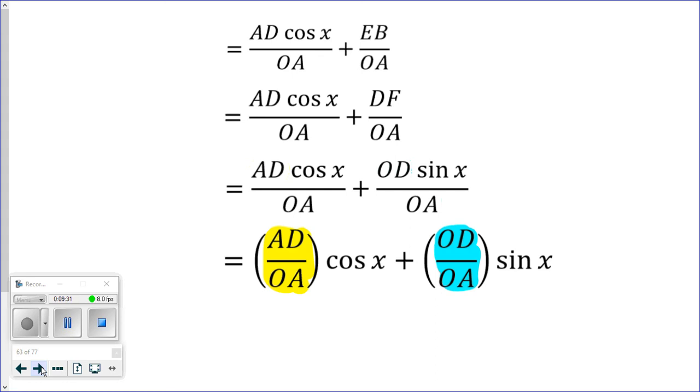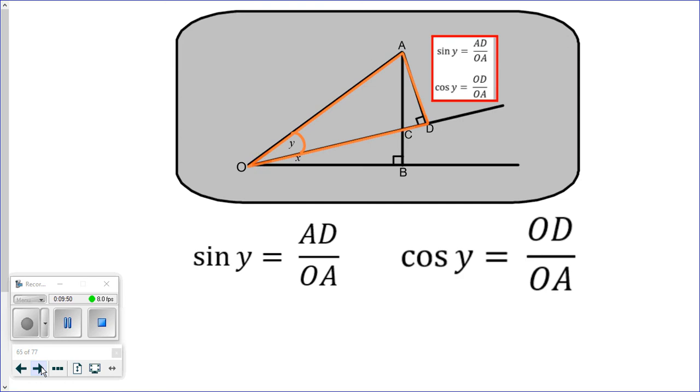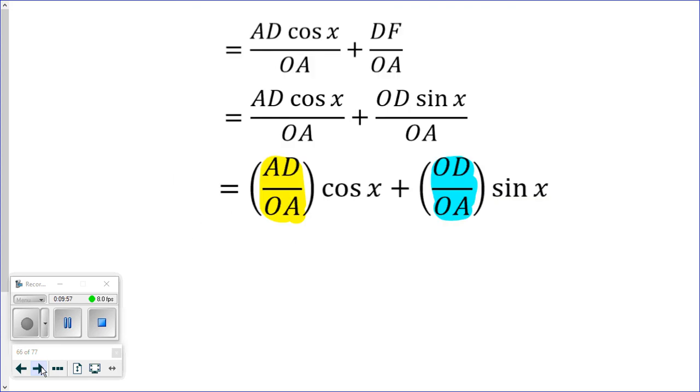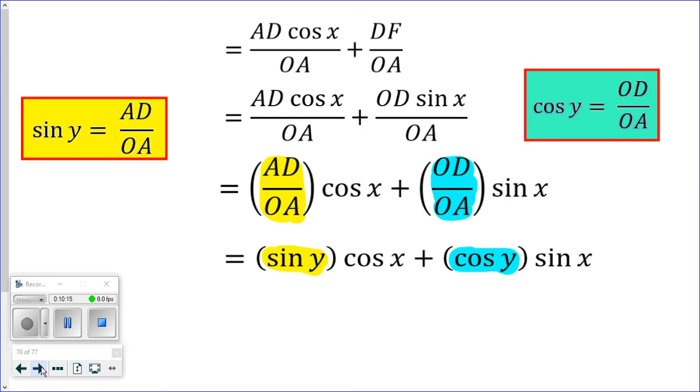So how are we going to deal with AD over OA and OD over OA? Well, earlier in this proof, in this video, we talked about triangle OAD. And OAD was that triangle that had angle Y in it. And we saw the sine and cosine ratios. So we learned that sine Y was AD over OA. And cos Y was OD over OA. And so if you look back at what we're looking at in the proof, those are exactly what we want. So AD over OA, highlighted in yellow, is just sine Y. OD over OA, highlighted in blue, is just cos Y. So if I substitute those trig values in, things are looking pretty good for this proof.